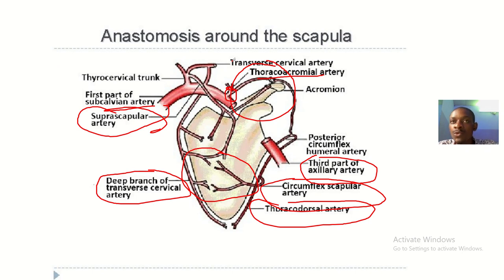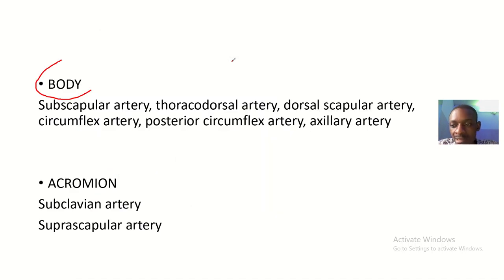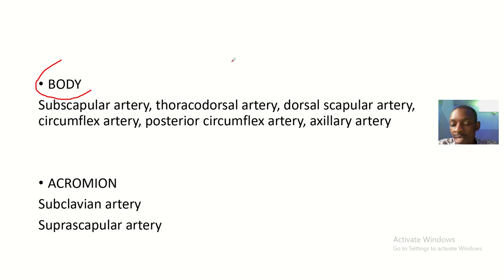So basically, the anastomosis of the scapula is in two parts: one at the acromion process and one at the body of the scapula. We discussed the various vessels that anastomose at the acromion and the ones that anastomose at the body. That was basic anatomy of the scapula. I'll close up and see you guys in the next tutorial.